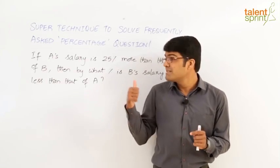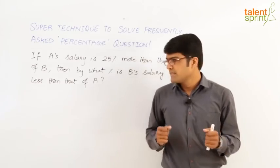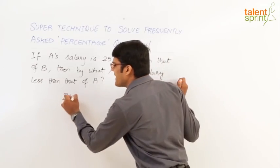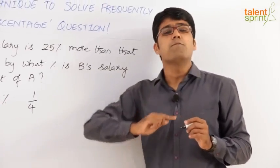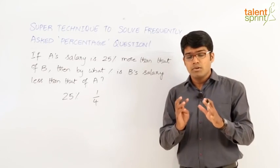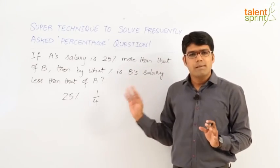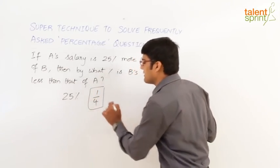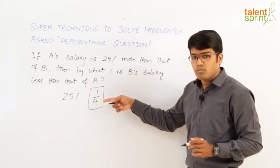So that is the point — which means 25% cannot be the answer. How do we solve this question? A's salary is 25% more than that of B. Now, 25% is 1/4. So we can say A's salary is one-fourth more than that of B. I am going to explain a very simple and smart technique that can help you get the answer in just 2 to 3 seconds. All we need to do is focus on this fraction: 25% is 1/4.